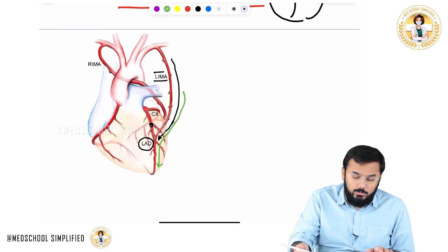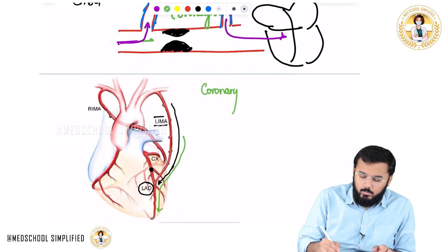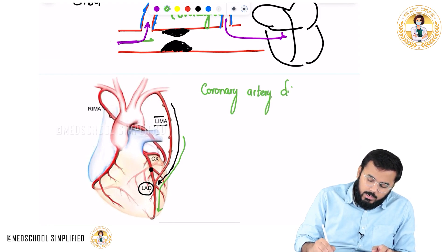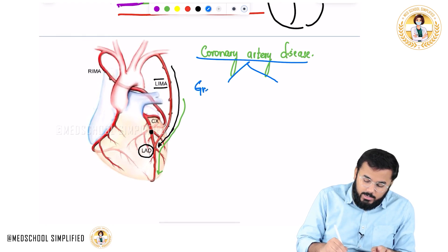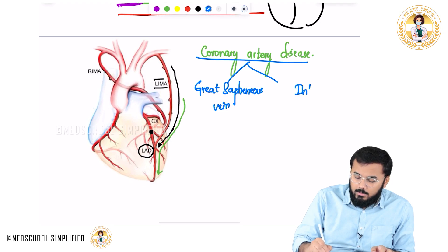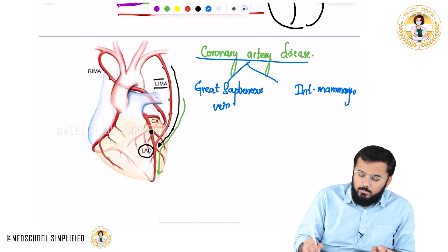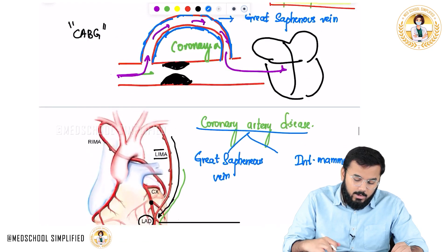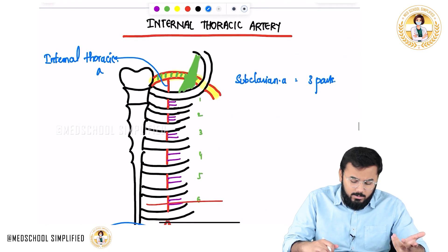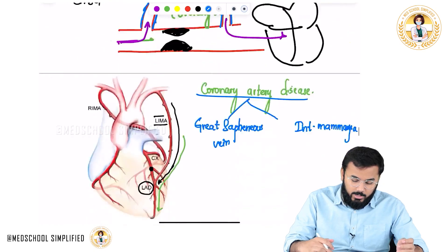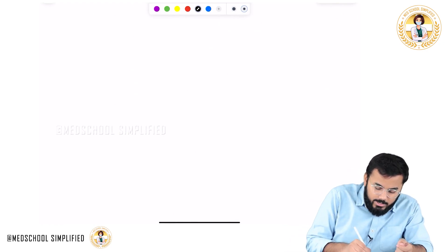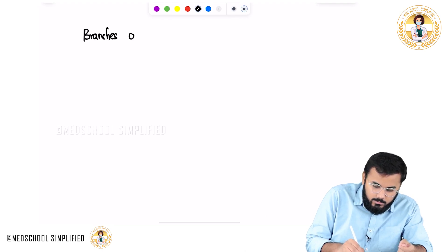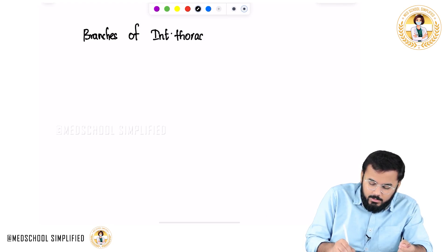In coronary artery disease, the two most important vessels used for bypass grafting are: the great saphenous vein from the leg region, and the internal mammary artery (internal thoracic artery). Now let us discuss the branches of the internal thoracic artery using a mnemonic to help recall them in exams.